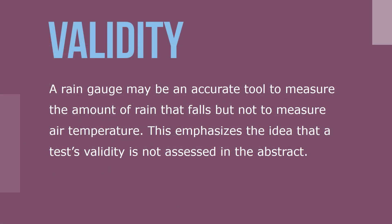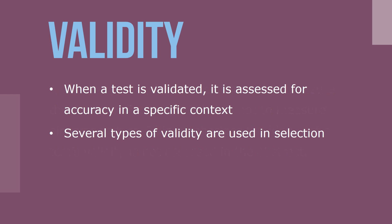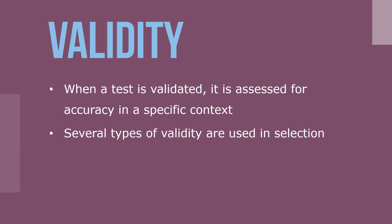Think of a rain gauge. A rain gauge may be an accurate tool to measure the amount of rain that falls, but not to measure air temperature. This emphasizes the idea that a test's validity is not assessed in the abstract. Rather, when a test is validated, it's assessed for accuracy in a specific context.